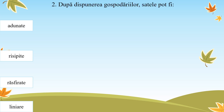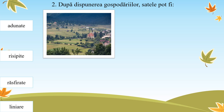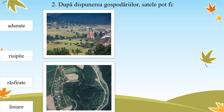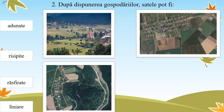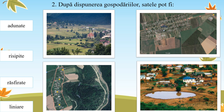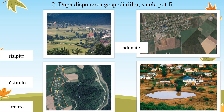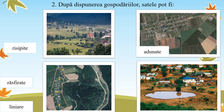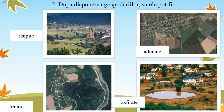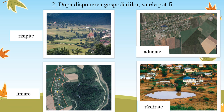Amintește-ți cele învățate la educație tehnologică și realizează corespondența corectă dintre tipurile de sate și imaginile corespunzătoare. Satele adunate sunt specifice zonei de câmpie; satele risipite, specifice zonei de munte; satele răsfirate, specifice zonelor de podișuri și dealuri; satele liniare, dispuse în lungul rețelelor de comunicație și a rețelei hidrografice.